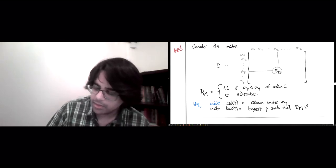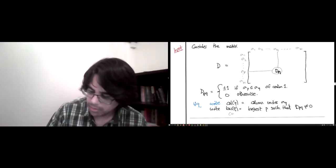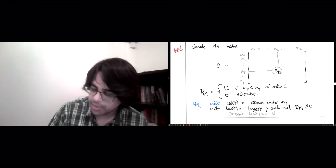And we write low Q to be the largest P such that d_pq is non-zero. And we assume or set low Q equal to 0 if no such P exists.